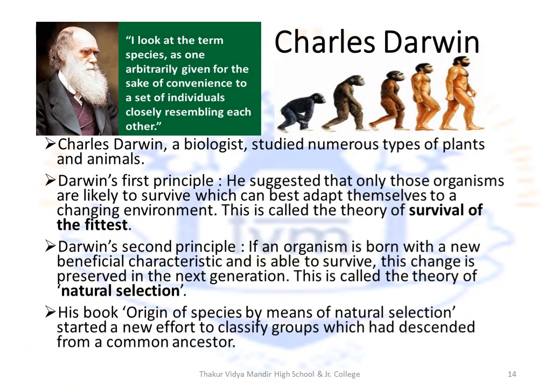Moving on to classification. Two key persons to remember are Charles Darwin and Carl Linnaeus. Charles Darwin is credited with stating the theory of evolution. He was a biologist who studied numerous types of plants and animals, and two of his principles are important for classification. His first principle is the survival of the fittest — he suggested that only those organisms likely to survive are those which can best adapt themselves to a changing environment, while the weak would perish.